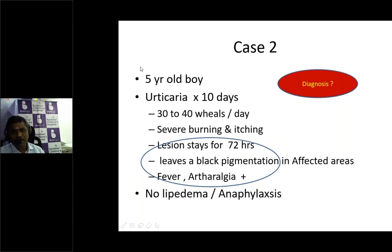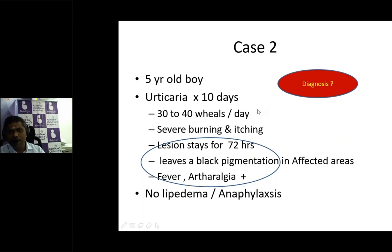Coming to case two: a five-year-old boy with urticaria involving 30 to 40 wheals per day for 10 days. The lesions stay in the same place for nearly 72 hours, and while disappearing leave a black discoloration. The child also has high fever spikes and arthralgia. Duration is less than six weeks so it is acute urticaria, but the lesions last 72 hours, leave black discoloration, and there are systemic symptoms - so what is the diagnosis?